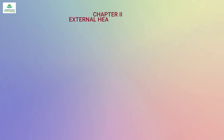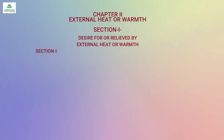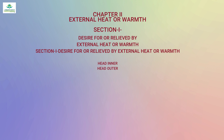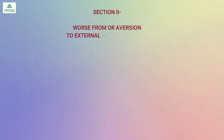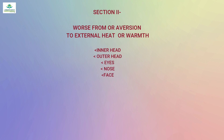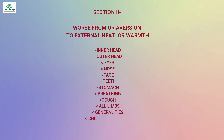Chapter 2 is 'External Heat or Warmth.' Section 1 is 'Desire for or relieved by external heat or warmth,' covering head inner, head outer, nose, face, teeth, abdomen, stool, upper limbs, lower limbs, all limbs, generalities, chill, fever, sweat and tissues. Section 2 is 'Worse from or aversion to external heat or warmth,' covering inner head, outer head, eyes, nose, face, teeth, stomach, breathing, cough, all limbs, generalities, chill, fever, sweat, tissues and skin. There are also sections on exposure to heat of stove and worse from heat of stove.